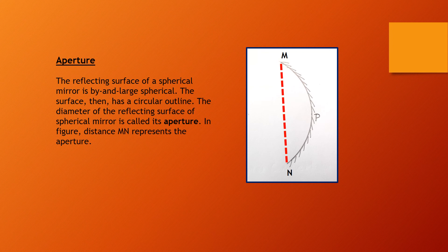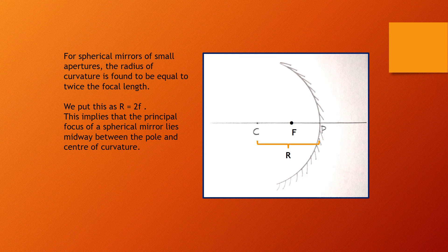For spherical mirrors of small apertures, the radius of curvature is found to be equal to twice the focal length, expressed as R = 2F. This implies that the principal focus of a spherical mirror lies midway between the pole and the center of curvature.